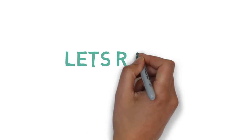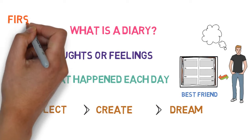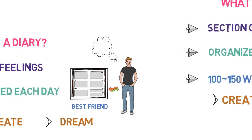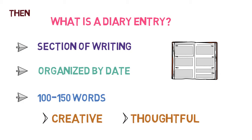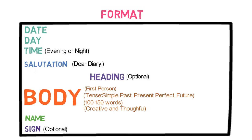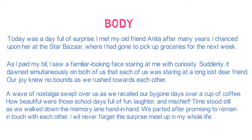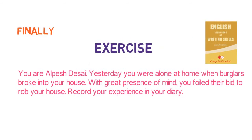That's all in this video. Let's quickly revise what we learned in this lesson. First, we understood what is a diary — a book in which you record your thoughts or feelings or what has happened each day. Your diary is for you and by you. Then we learned what is a diary entry or diary writing — a section of writing that has been organized by date in a diary. Then we learned the format of diary entry. Then we understood this format with an example. Finally, I gave you an exercise to practice, whose answers you will be providing in the comment section.